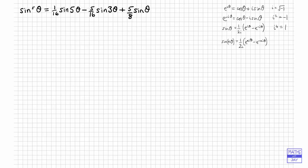So we've got sine theta and we want to raise it to the power of 5. Let's write down what sine theta is and raise it to the power of 5, doing each bit separately. So we've got the 1 over 2i, all to the fifth — well, 1 to the fifth is just 1, so we'll leave that as it is. And then we've got e to the i theta minus e to the minus i theta, all to the power of 5.